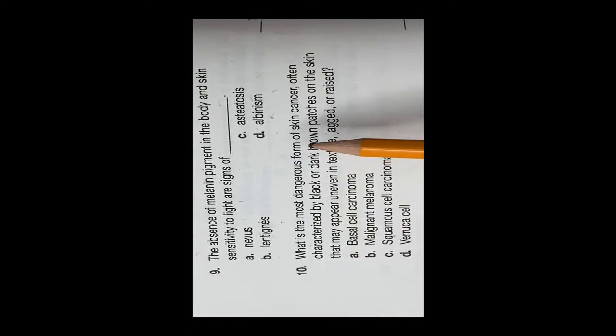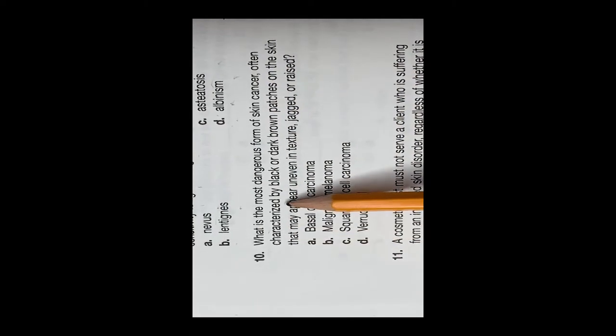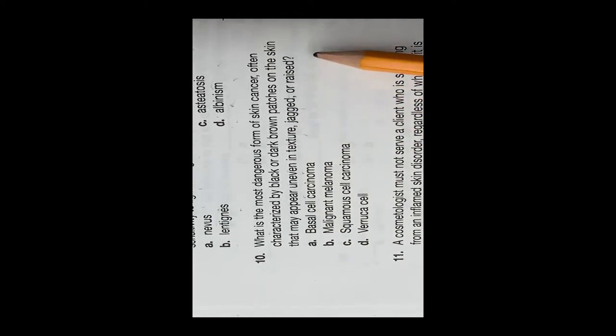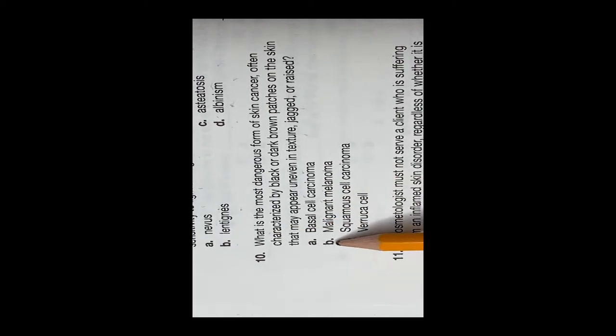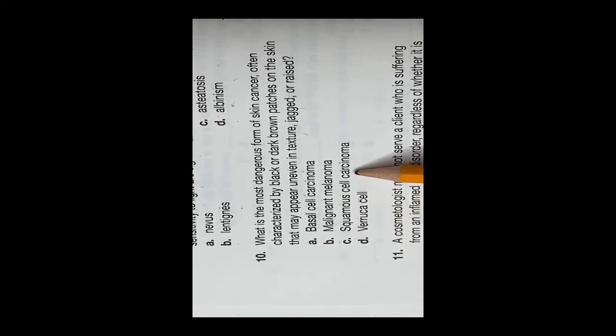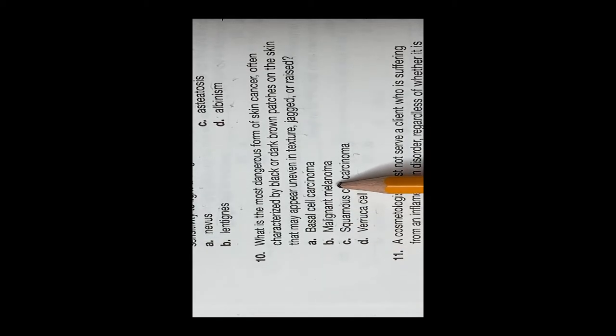Question 10: Which is the most dangerous form of skin cancer, often characterized by black or dark brown patches on the skin that may appear uneven in texture, jagged, or raised? Is it A, basal cell carcinoma. B, malignant melanoma. C, squamous cell carcinoma. Or D, varicella? And the correct answer is B, malignant melanoma.